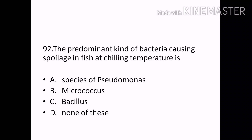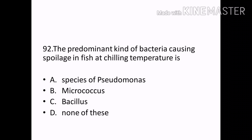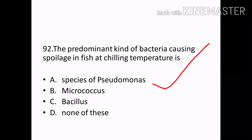The predominant kind of bacteria causing spoilage in fish at chilling temperature is: Options — Species of Pseudomonas, Micrococcus, Bacillus, none of the above. Correct answer: Option A — Species of Pseudomonas.